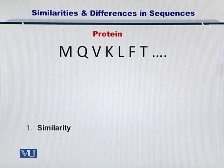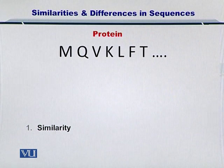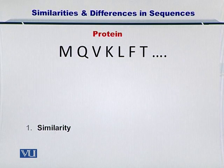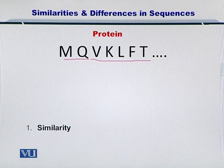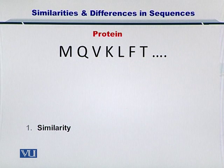Let's start by considering a protein sequence given here. Only a few amino acids are mentioned — typically proteins are very long, but this is just an example. We have MQVKLFT, that is about seven amino acids, and now we are going to look at what similarity means precisely.